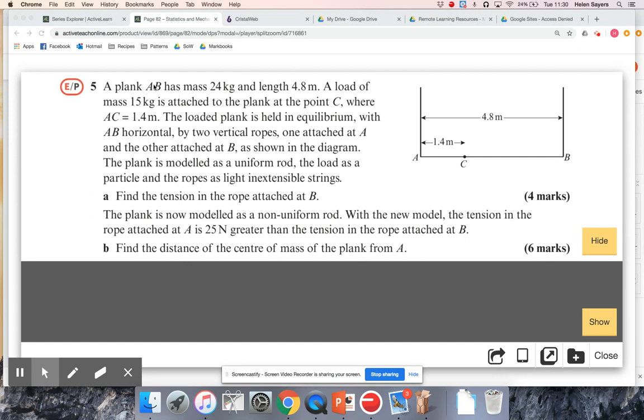We'll get question 5. A plank AB has mass 24 kilograms and length 4.8 meters, and that's what's shown just there in that diagram. We have got a 15 kilogram mass at C, and we're given the distance A to C.